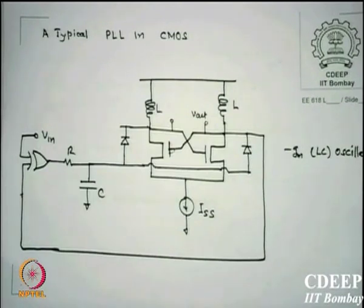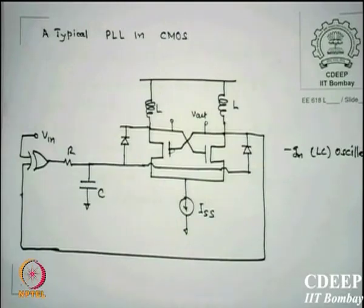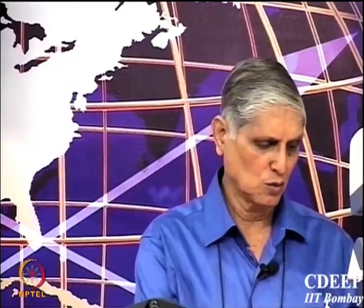PLLs are crucial for RF applications because the VCO frequency must be held constant. In RF receivers, images are strong, and a noisy VCO would propagate into the digital side, requiring very large capacitance for A/D converters. Frequency must be reduced from higher values cleanly, without images passing through. Therefore frequency must settle exactly to the desired value.